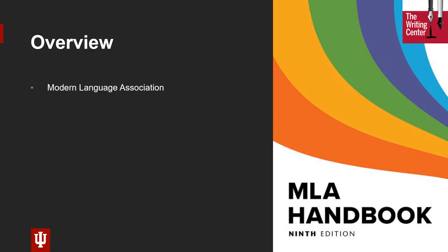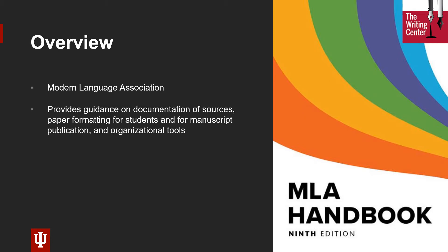MLA is the official publication guide of the Modern Language Association. The manual provides guidance on how to document sources, including in the body of a paper, as well as on a works cited page at the end of the document. It also includes specific guidelines for how papers should be formatted, including organizational tools like section headings and appendices.